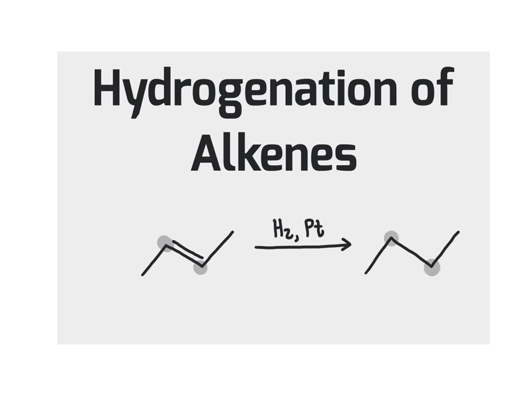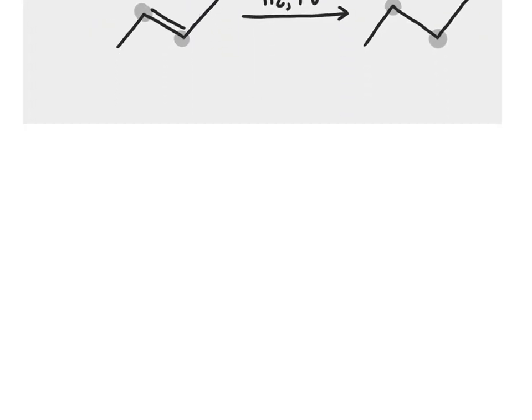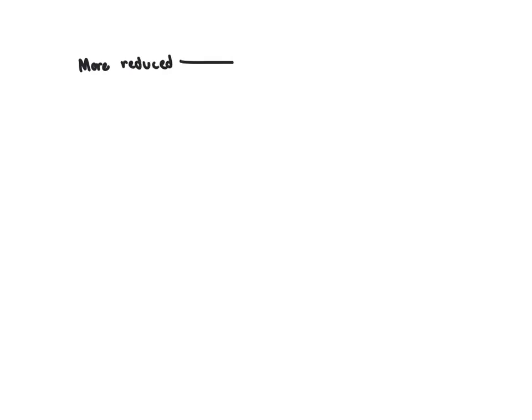So we've taken that carbon-carbon double bond and reduced it to a carbon-carbon single bond. Let's look at this reaction in a bit more depth. As we start, I'm going to remind you of some information about the oxidation states of organic molecules. When we think about going from a more reduced molecule to a more oxidized molecule, we can think in terms of the number of bonds between carbon and hydrogen as one of our ways of looking at the oxidation of a molecule.